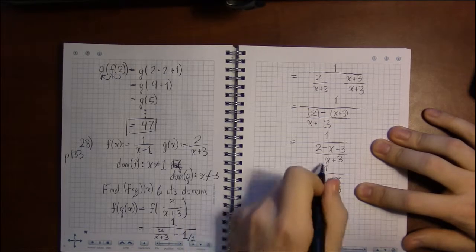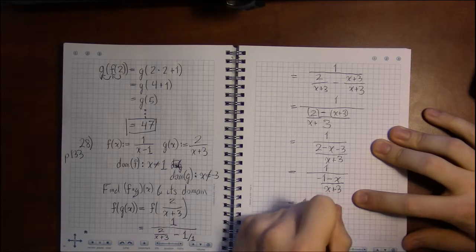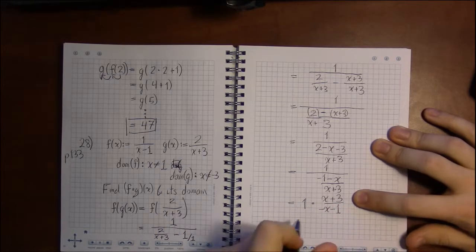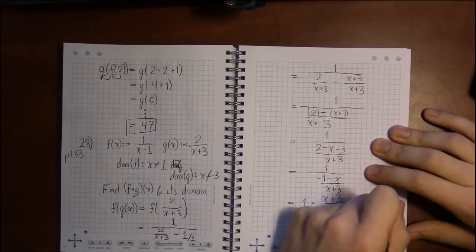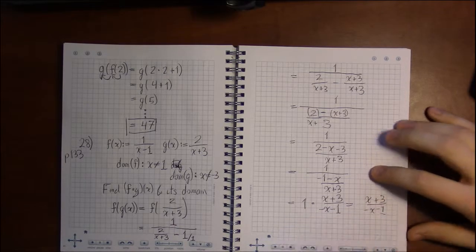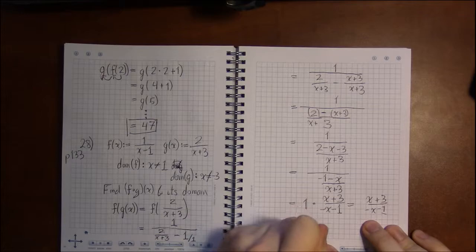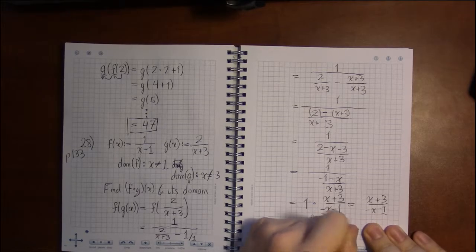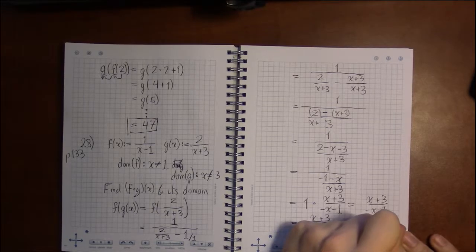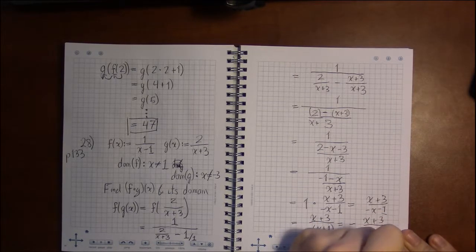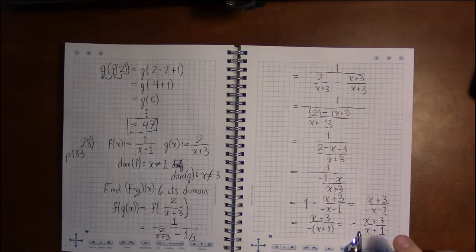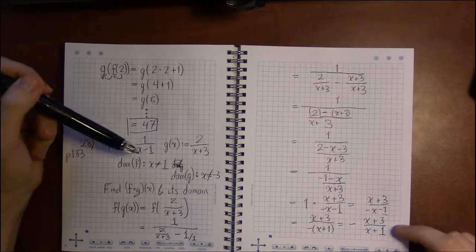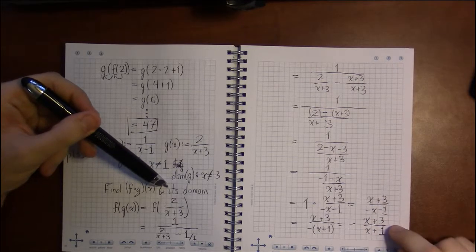And now dividing by a fraction is the same thing as multiplying by the reciprocal. So we get x plus 3 over minus x minus 1. And if you want, you can pull out—there's a negative in the denominator that can be factored out and brought outside the fraction. So this looks as minus, on the outside of the fraction, x plus 3 over x plus 1. That, believe it or not, I think is the relatively easy part. Granted, it's long and tedious, but finding the domain requires a great deal of thought here.